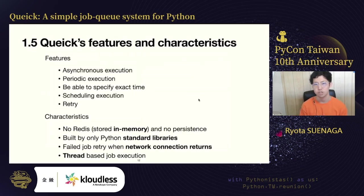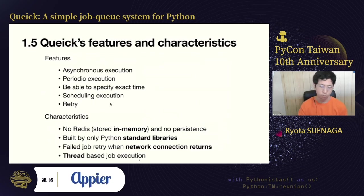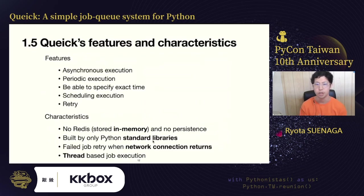Basic features for a job queue system are implemented in Qwik. Qwik can run jobs asynchronously and run them periodically. Scheduling is also available. Finally, Qwik retries failed jobs at every specified interval — by default, it uses exponential backoff. There are four main characteristics of Qwik: no Redis and no persistence; Qwik is trusted only in memory, so jobs are volatile. The second is that Qwik is built only using Python standard libraries.